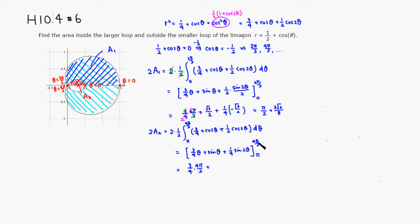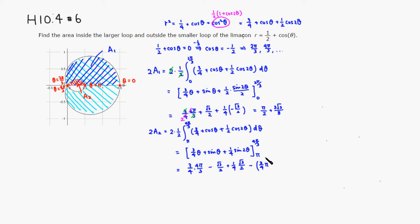Plugging in the upper limit 4π/3: (3/4)(4π/3) = π, sin(4π/3) = −√3/2, and sin(8π/3) = sin(2π/3) = √3/2, giving (1/4)(√3/2) = √3/8. For the lower limit π: (3/4)π, sin(π) = 0, sin(2π) = 0. So subtracting: π − (3π/4) = π/4.